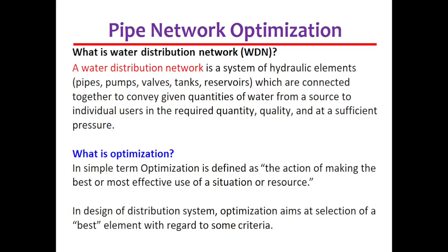Now, what is optimization? When we say optimization, this is the action of making the best use of resources. When you make the best use of resources, you are doing optimization. But in the designing of a distribution system, the term optimization aims at selection of the best element with regard to some criteria. You set your criteria, then you do optimization based on that criteria, making the selection of elements based on the set criteria.